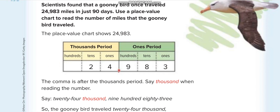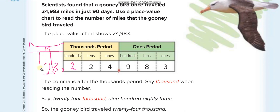Let me give you another example with more digits. If we add a 1 in the millions place, a 3 in the ones of the millions period, and a 2 in the tens of the millions period, then that 1 is the millions period. We also have hundreds. So we read it: 23 million, 124 thousand, 983. I hope you understand this.